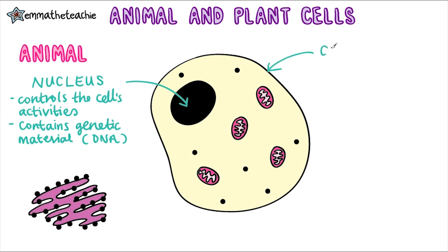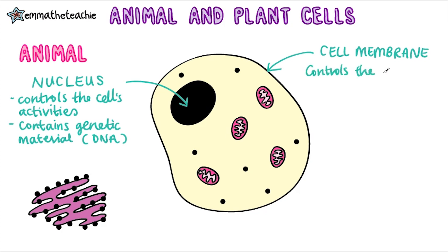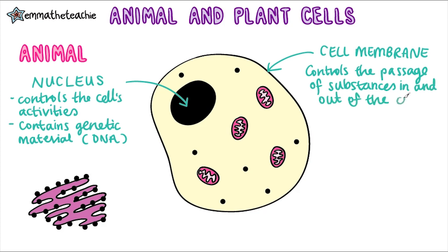On the outside of the cell is the cell membrane. This is responsible for controlling the passage of substances in and out of the cell, so that's things like glucose and water.